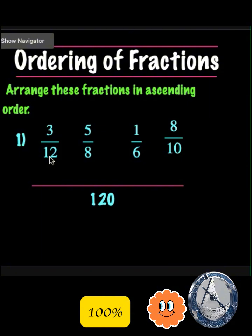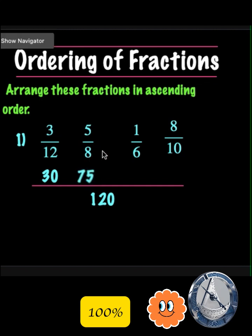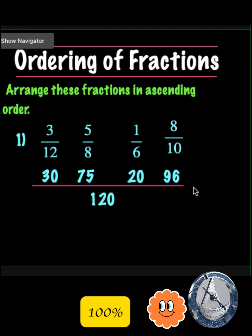120 divided by 12 gives 10; 10 times 3 is 30. 120 divided by 8 gives 15; 15 times 5 is 75. 120 divided by 6 gives 20; 20 times 1 is 20. 120 divided by 10 gives 12; 12 times 8 is 96. These multiples become the new numerators, while the new denominator is 120. Now they have the same denominator, so the fraction with the biggest numerator is the largest. Starting from the smallest: 1/6, then 3/12, then 5/8, and the largest is 8/10.